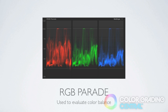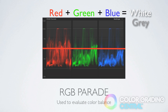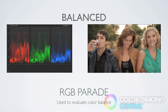Moving on to the RGB Parade — you'll notice it looks similar to the waveform monitor, other than the exposure readings are broken out into the individual channels of red, green and blue. The RGB Parade scope is useful in evaluating and correcting color balance, or shots with a color cast or dominant color. If you add red, green and blue in equal amounts you get white at 100%, grey at 50% and black near 0%. If they're added together unequally then you get a color.